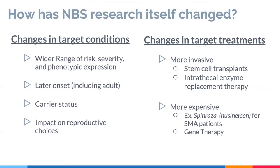Newborn screening has changed significantly over the last 50 to 60 years, particularly in research. We've started to study new conditions with a wider range of risk, severity, and phenotypic expression. We've looked at conditions that may have later onset — whether childhood or adult onset — and examined the implications of carrier status through a newborn screen for families, including potential impact on reproductive choices of parents or of the newborn when they grow up.